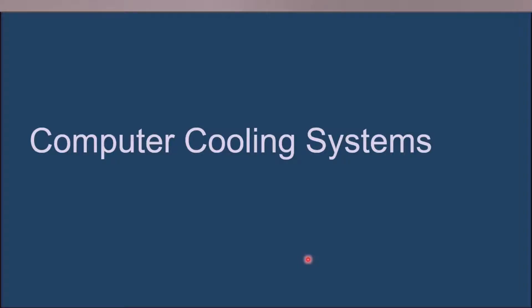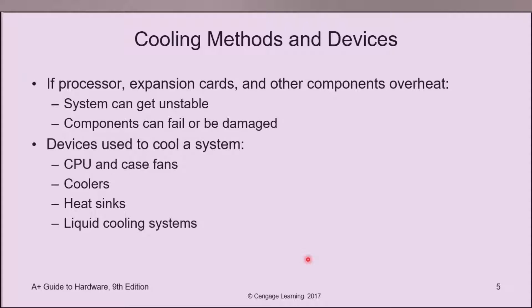Computer cooling systems. What are the different cooling methods and devices used in our computer systems to keep the temperature within acceptable levels? If a processor, expansion cards, and other components overheat, the system can get unstable and components can fail or be damaged. Devices used to cool a system include case fans, coolers, heat sinks, and some computers use a liquid cooling system.